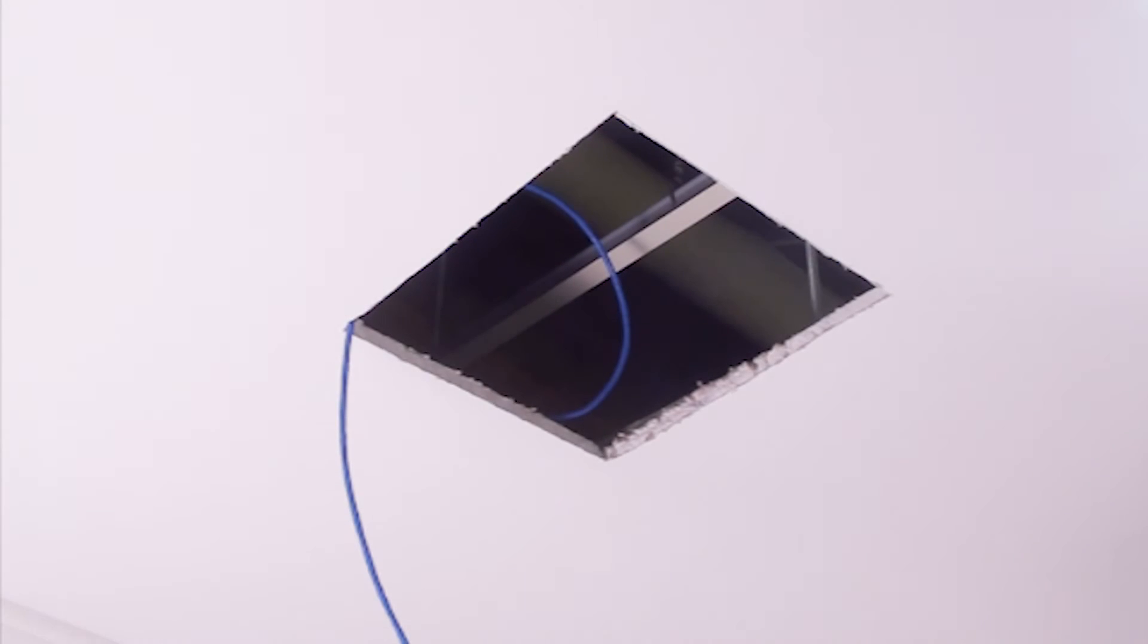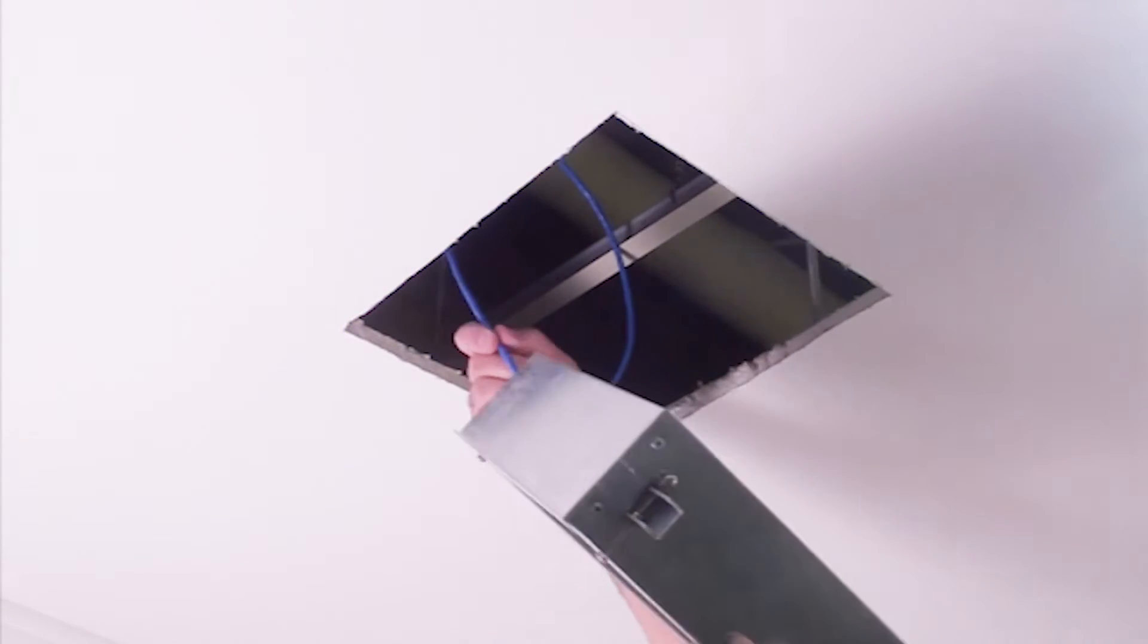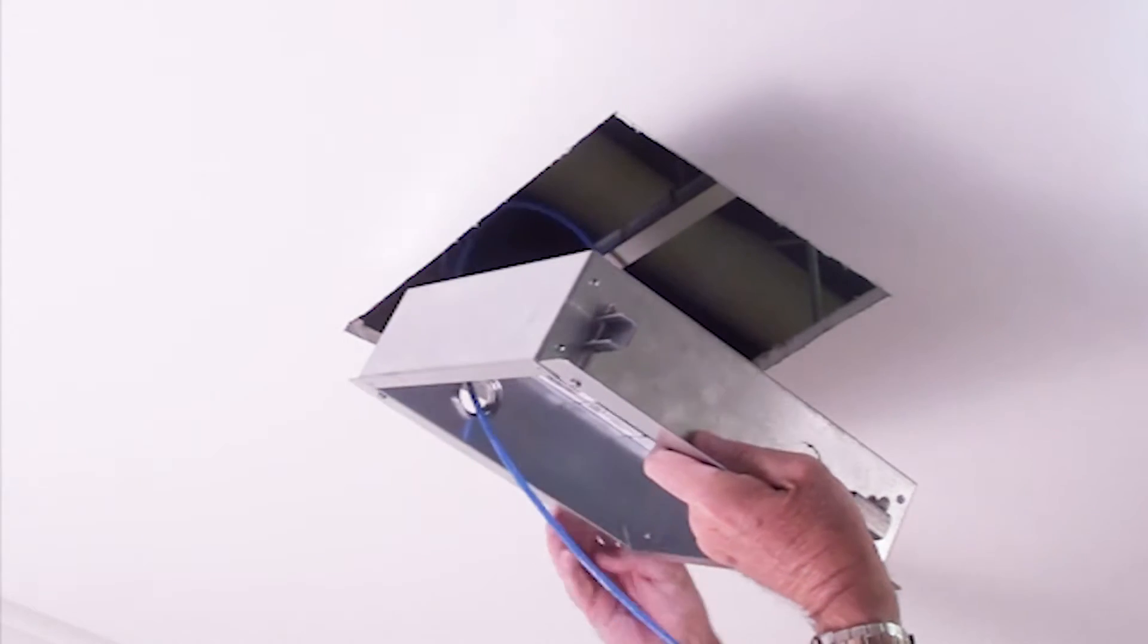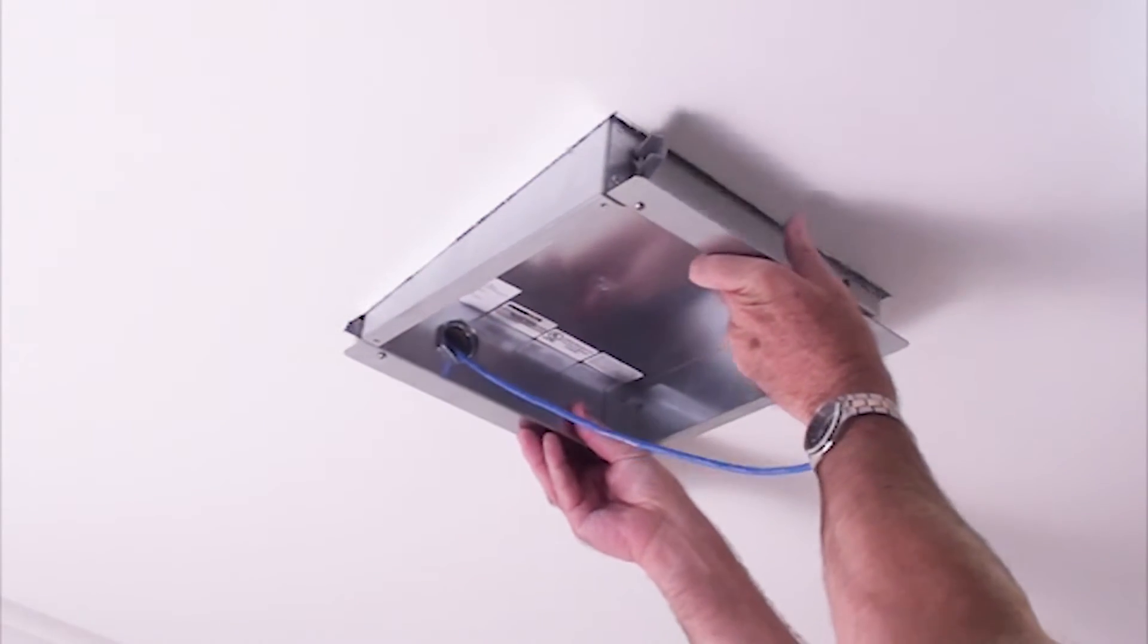Insert the ethernet cable through the conduit connector previously installed in the enclosure. Insert the box into the opening in the ceiling or wall.